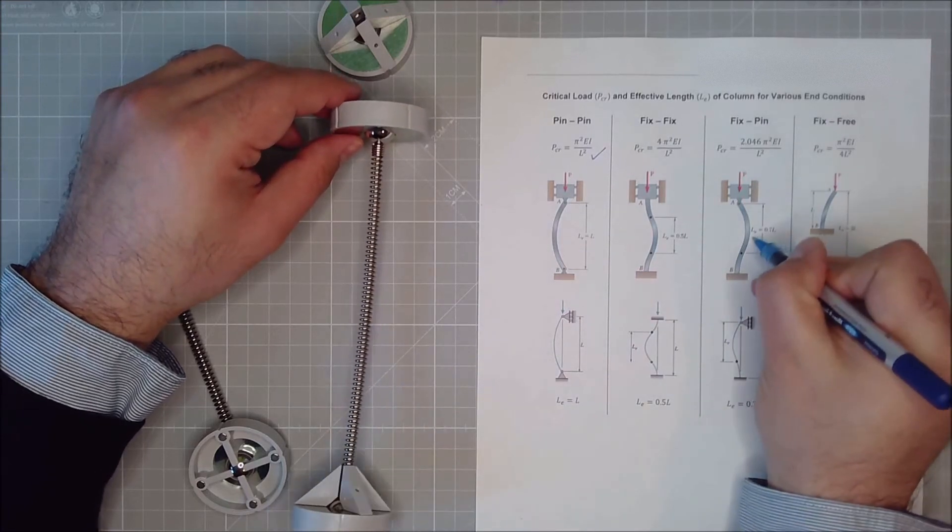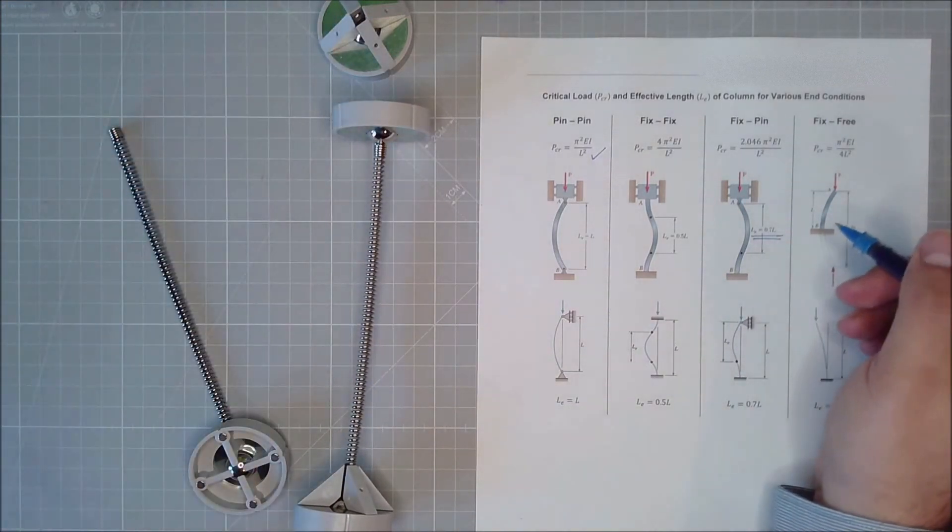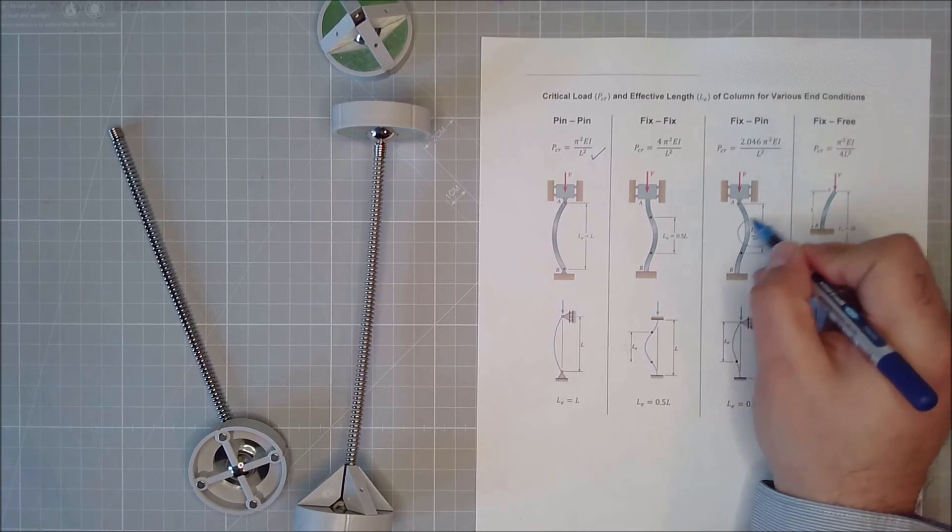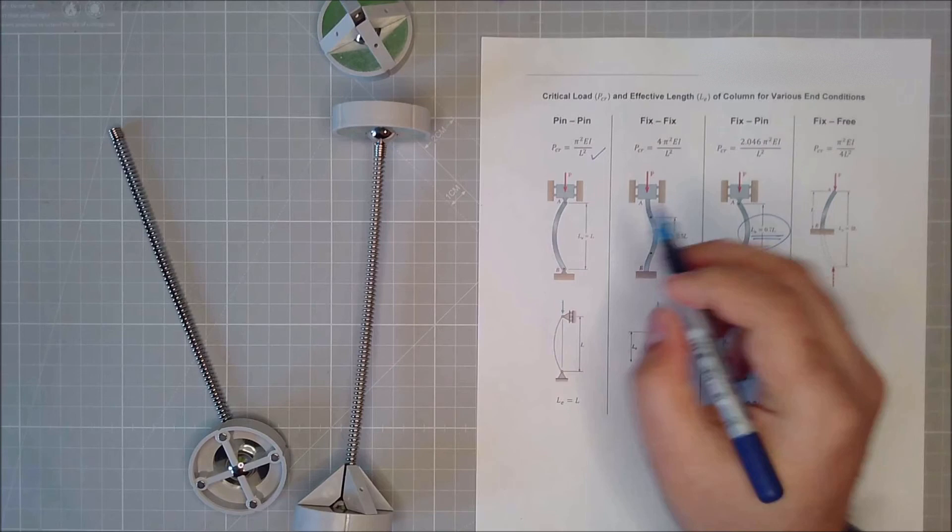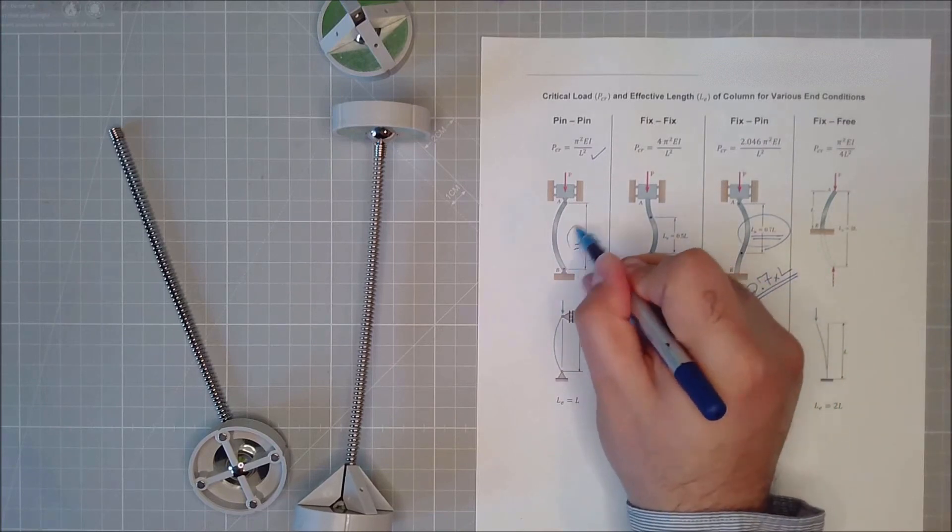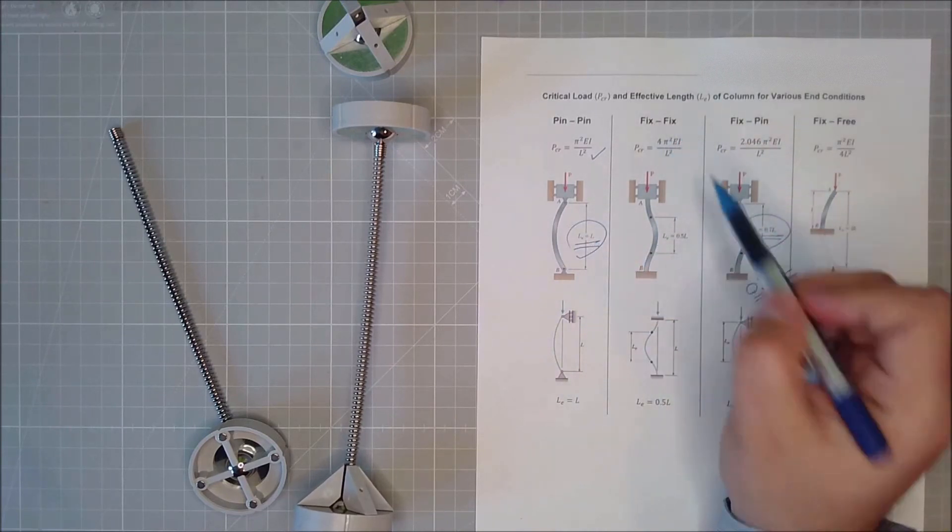And someone has calculated and said that the effective length of this is 0.7 times the actual length of your column. So if this, the effective length was equal to L, in case of fix, fix, my effective length will be half the length.